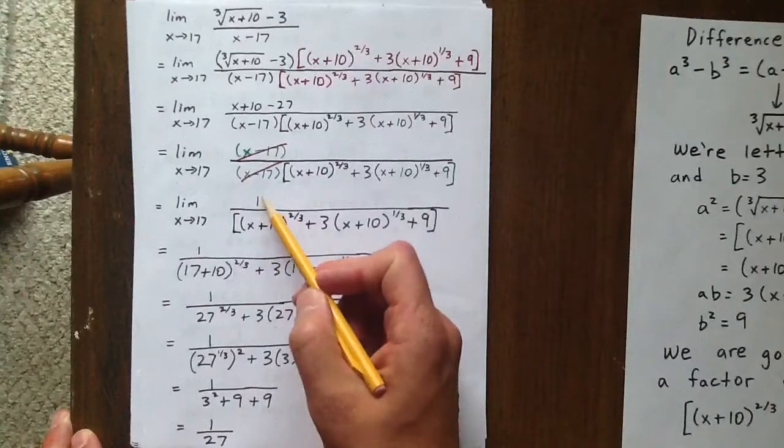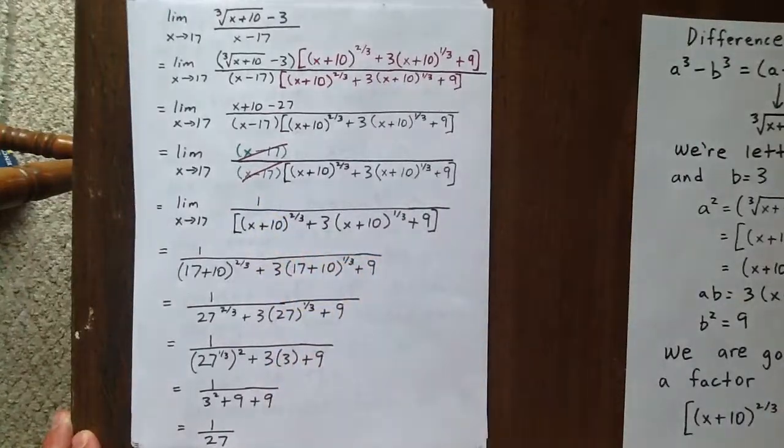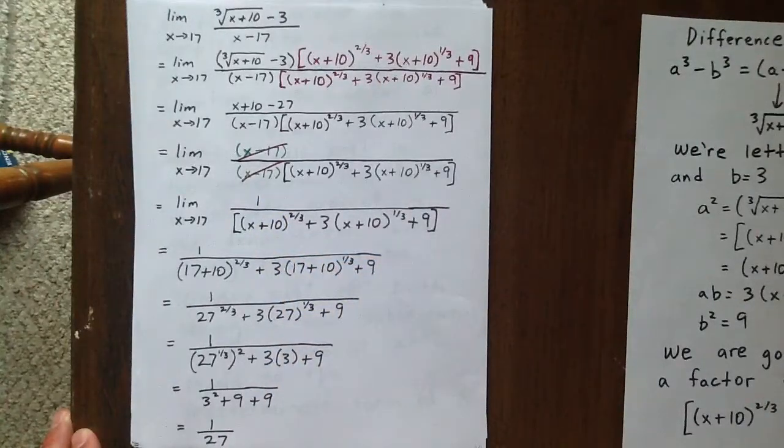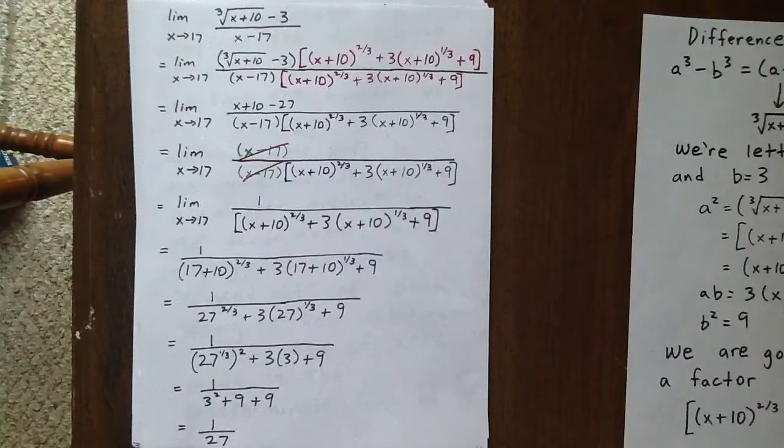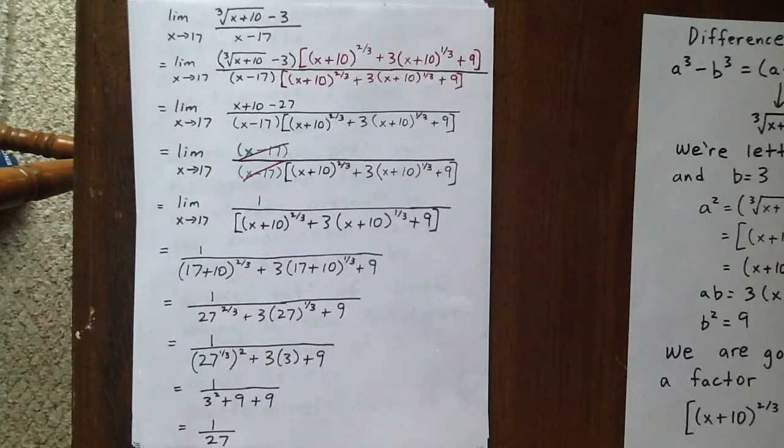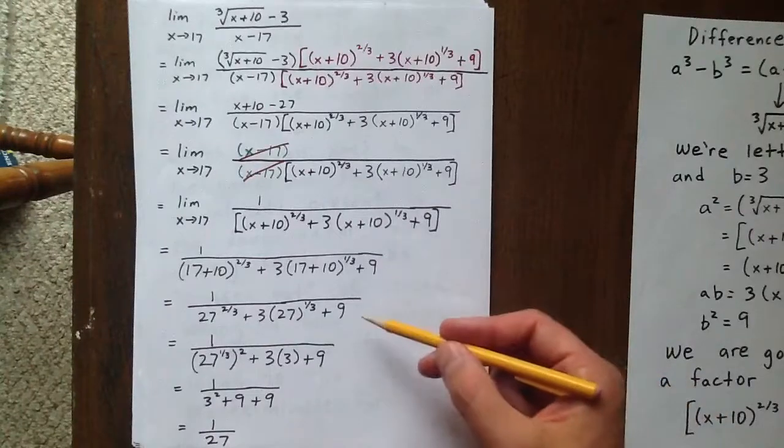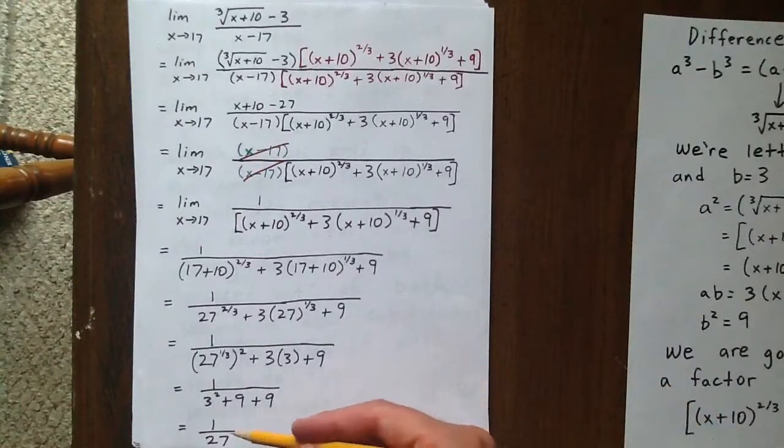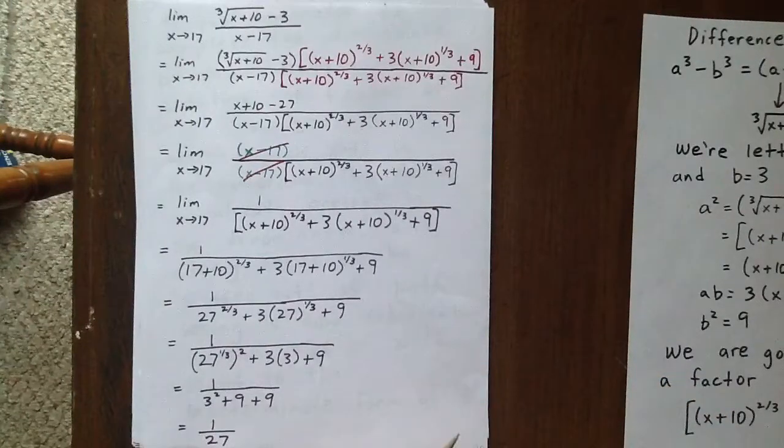Crossing those out gives us 1 over this lengthy expression in the denominator. We can now substitute the x value of 17 in for x. And simplifying that leads to an ultimate answer of 1 over 27.